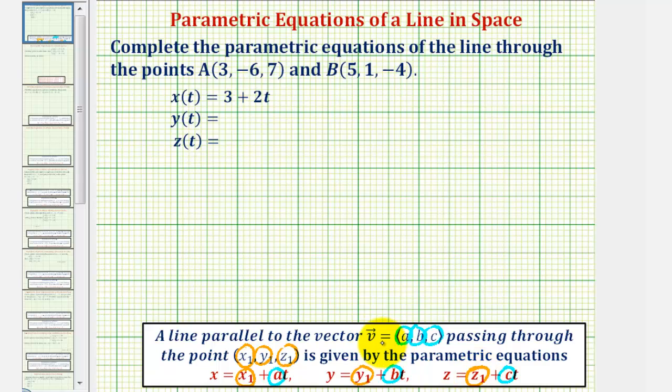Notice how the components of the direction vector a, b, and c can be thought of as the relative change of x, y, and z with respect to the independent variable t.